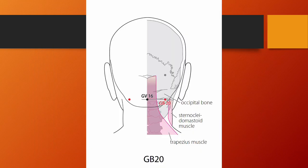Gallbladder 20, Fengchi or wind pool, is located on the neck, below the occiput, at the level of GV16, in the depression between the upper portion of the sternocleidomastoid and trapezius muscles. It is the crossing point of the gallbladder meridian and the yang motility vessel. Functions: dispels exterior and interior wind, clears the head, benefits the eyes, nose and ears, subdues liver yang, activates the meridian, relieves pain. Gallbladder 20 is an important point to treat any wind-cold or wind-heat pattern. Needling: oblique insertion 0.8 to 1.2 tsun towards the tip of the nose with the tip slightly downward, or subcutaneous insertion through GV16. In the deeper layer is the medulla oblongata; angle and depth must be strictly controlled.